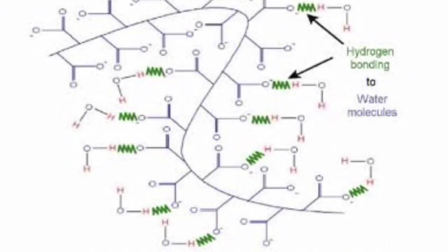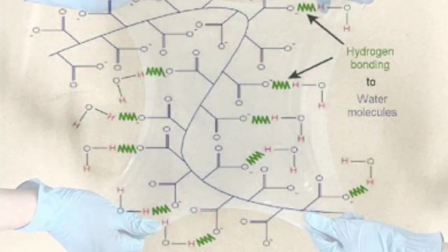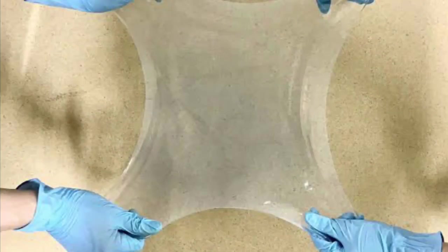Moreover, these rigid cross-links restrict the free movement of the chain, even as it becomes hydrated, which prevents the polymer from dissolving. This essentially creates the soft, gel-like structure of hydrogels that we commonly observe.